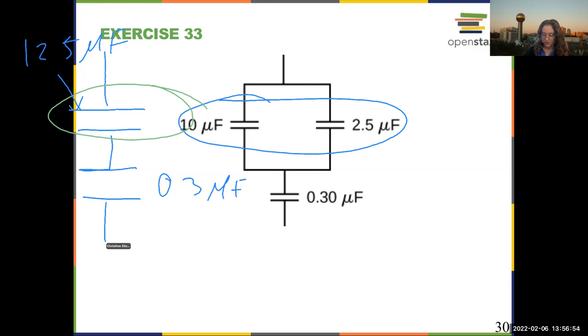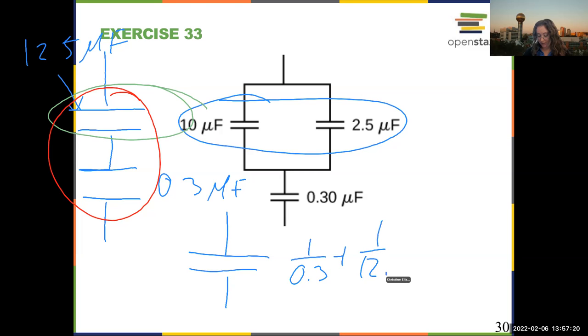All right, so in my next step, I am going to combine these guys. And I am left with a one capacitor circuit. Capacitors in series add in inverse. So if I want to have the effective capacitance of this circuit, I need 1 over 0.3 plus 1 over 12.5 inverse and my units will be microfarad.